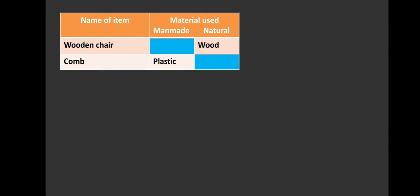Let us see the table with two items being mentioned and the materials used. Wooden chair is made of wood, so it comes under the natural category, whereas comb is made of plastic material and comes under man-made category, since wood is naturally available in nature and plastic is a man-made material.